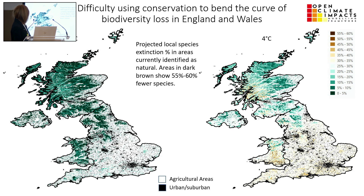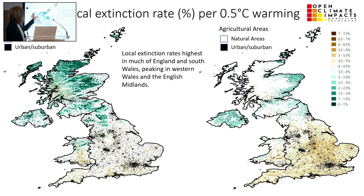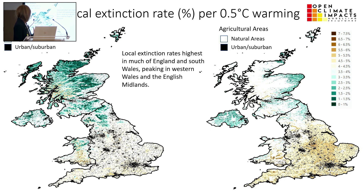In these maps, agricultural areas are colored white and urban areas are colored black. You can see the rate of extinction per half degree of warming, which is roughly linear — derived by looking at the difference between 1.5 and 4 degrees and then averaging. The areas most resilient are in the north of Scotland, while those losing species fastest are in the southeast.